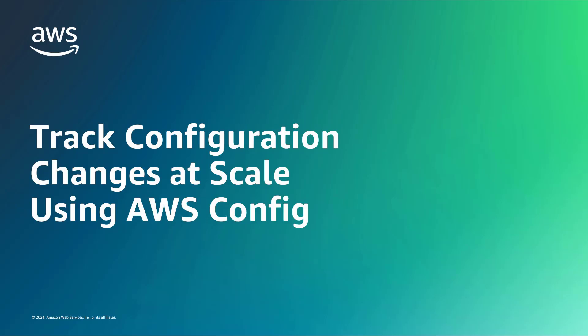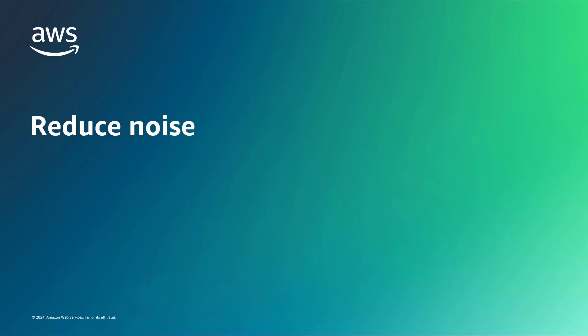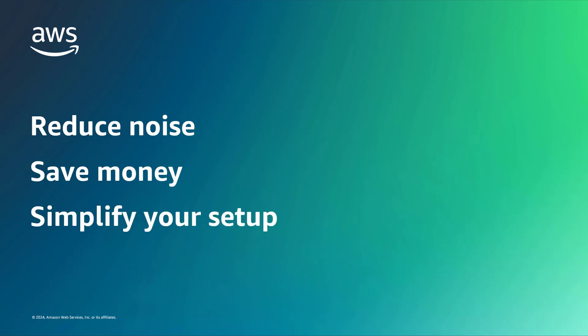In this video, you'll see how to track configuration changes at scale using AWS Config. With this solution, you can reduce noise by focusing only on the resources you need, save money by updating the frequency of your resource tracking, and simplify your setup by following best practices.